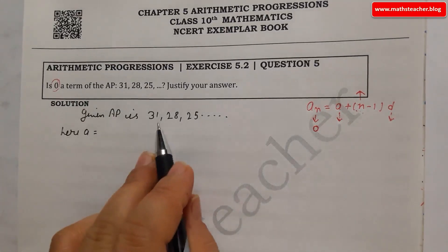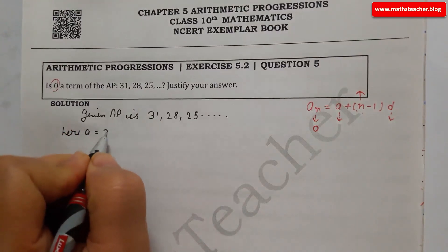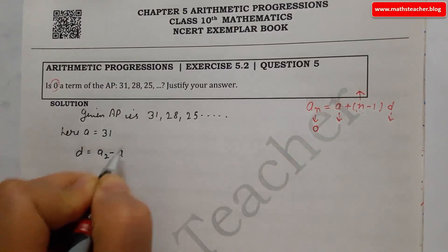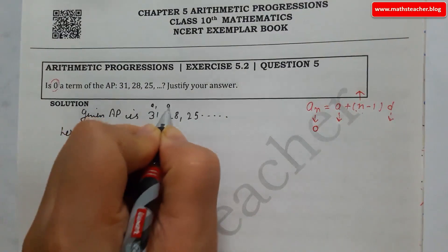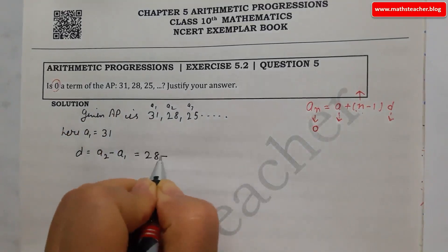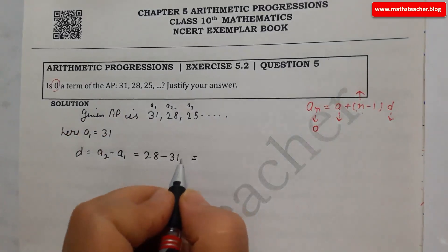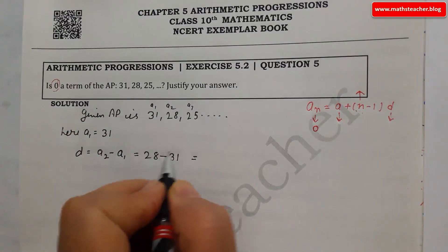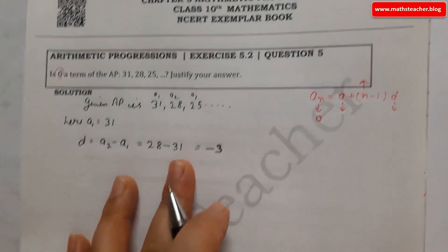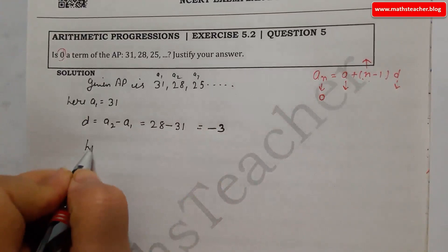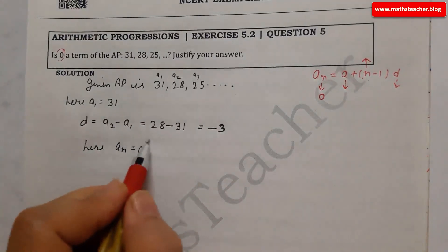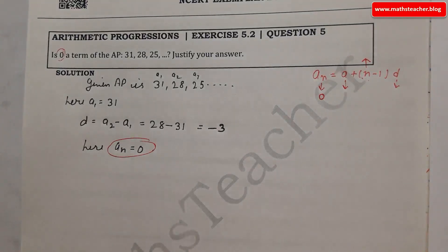Given AP is 31, 28, 25 and so on. Here A equals 31. For D, we calculate A2 minus A1: 28 minus 31 equals −3, so D = −3. We set AN equal to 0, since we want to check if 0 is a term.